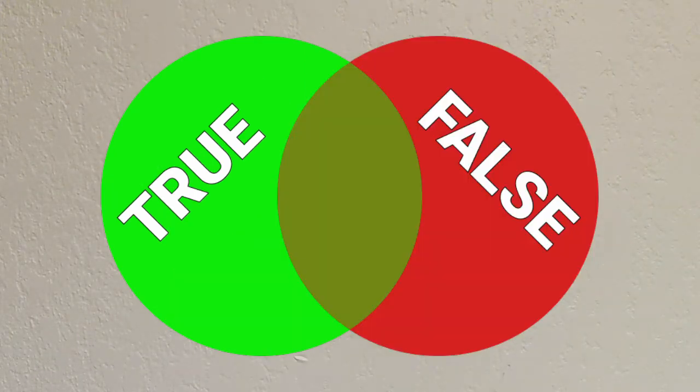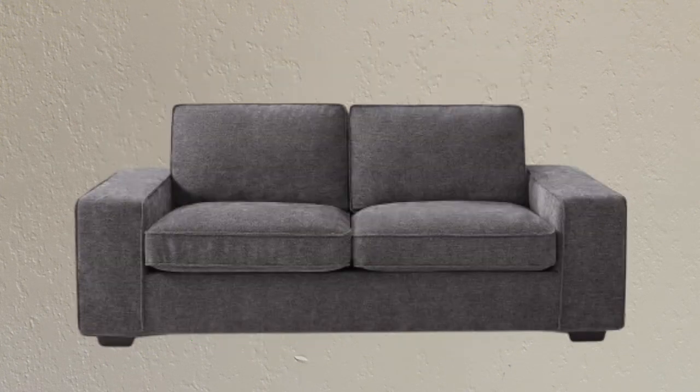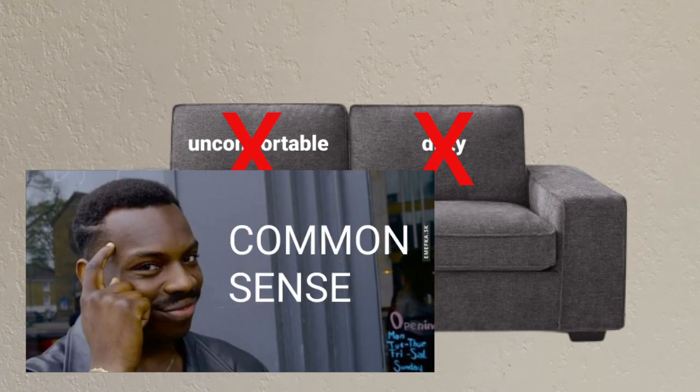On the flip side, adding a third category that is both options is known as the glut strategy. On the surface level, this one seems pretty easy to debunk. If a couch is uncomfortable and dirty, it can't also be comfortable and clean. This seems like common sense,